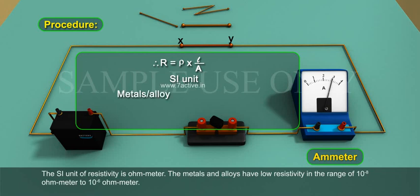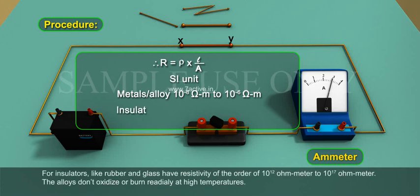The metals and alloys have low resistivity in the range of 10 to the power of minus 8 ohm meter to 10 to the power of minus 6 ohm meter. For insulators, like rubber and glass, have resistivity of the order of 10 to the power of 12 ohm meter to 10 to the power of 17 ohm meter.